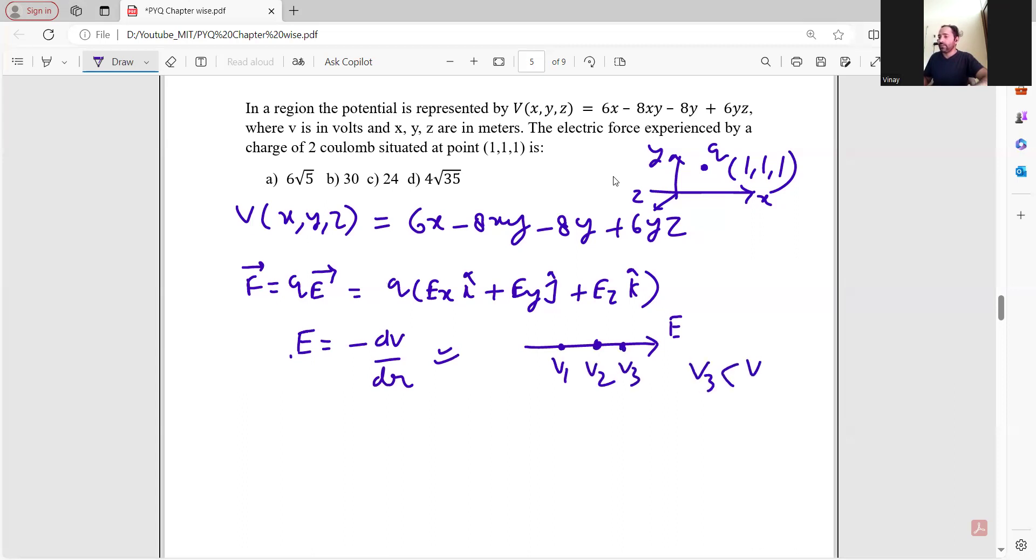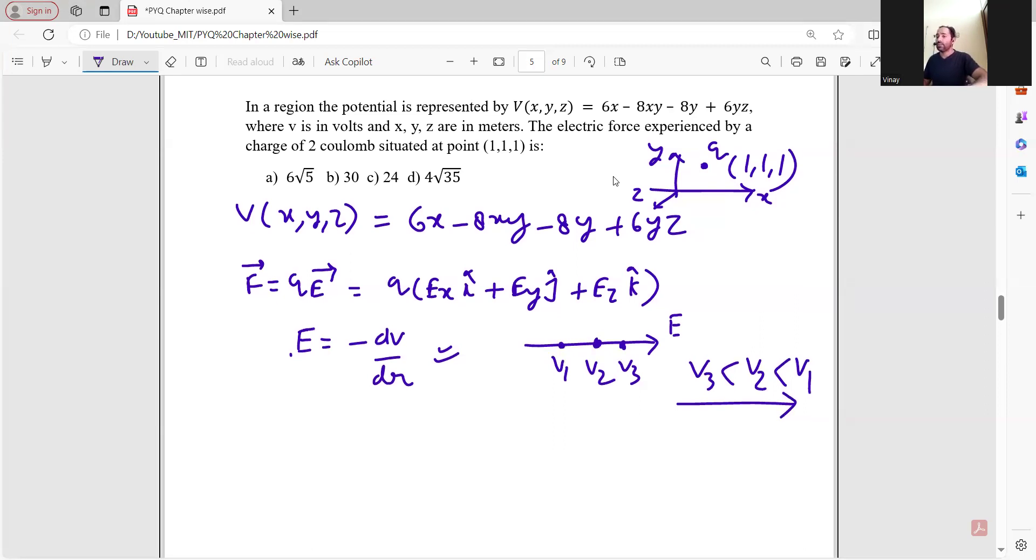So basically, V3 is less than V2 and V2 is less than V1. We have to take minus sign to compensate it.